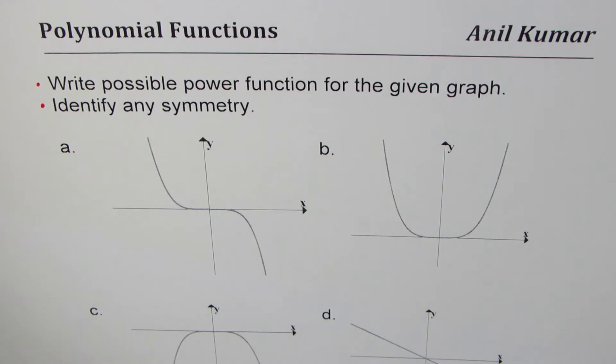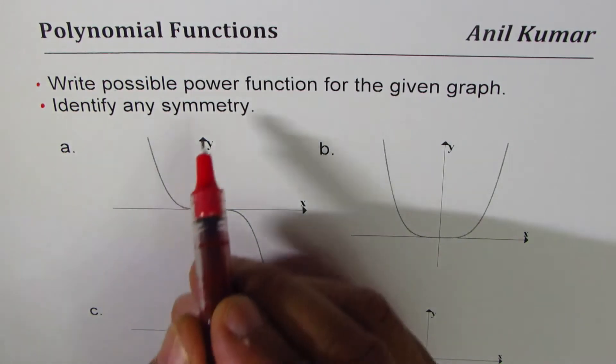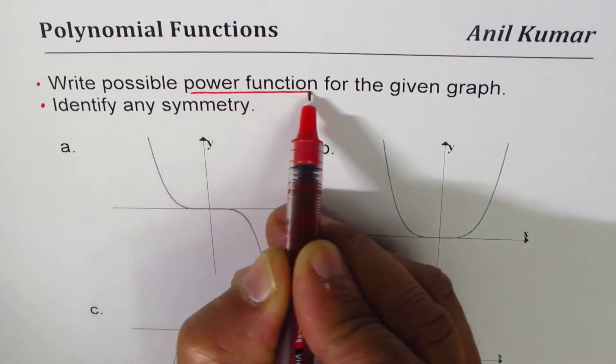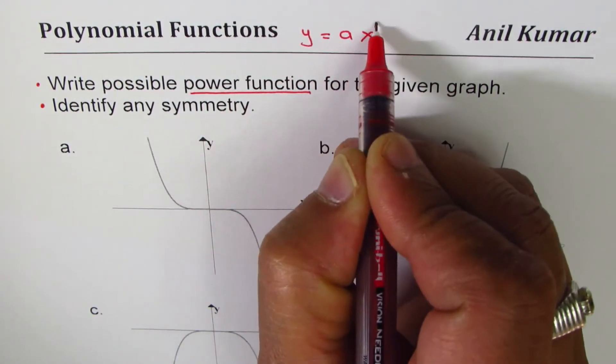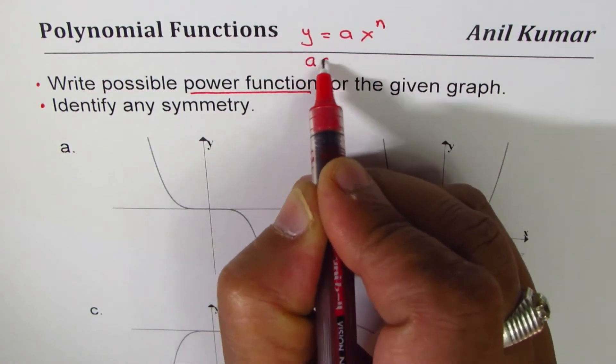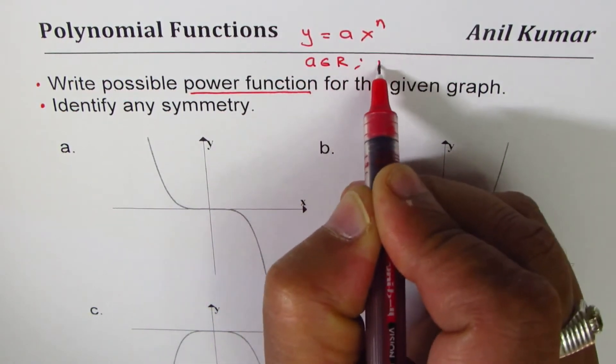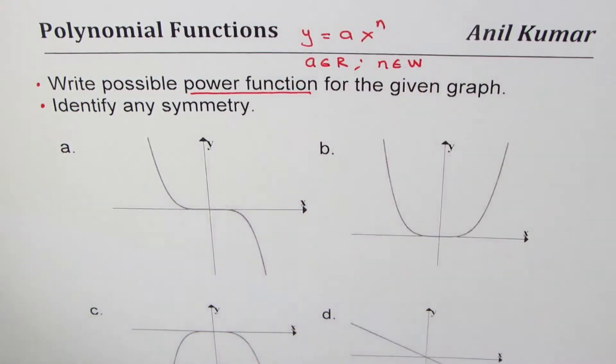Now what is the power function? A power function is of the form y = ax^n where a belongs to real numbers and n belongs to whole numbers. That's what a power function is. So let's answer these questions one by one.